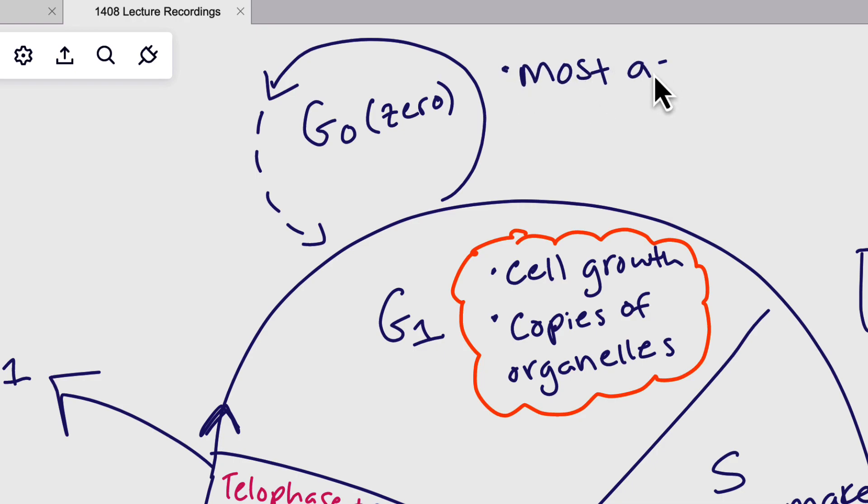So most adult cells are in G0, doing their day-to-day stuff. Basically, this is a non-dividing state. So if the cells are not called into the cell cycle, then they'll be in G0. But it does all its other stuff, so I'm going to say all other jobs are going on.